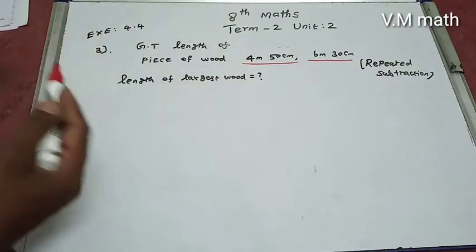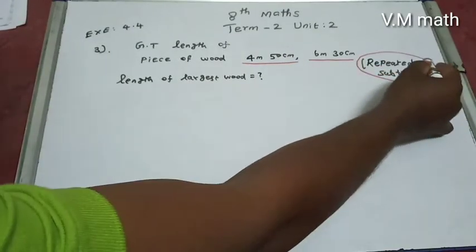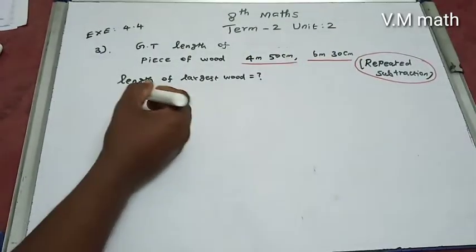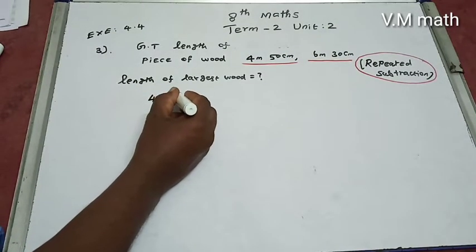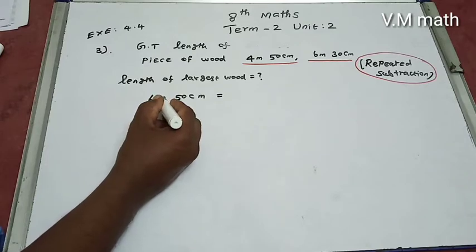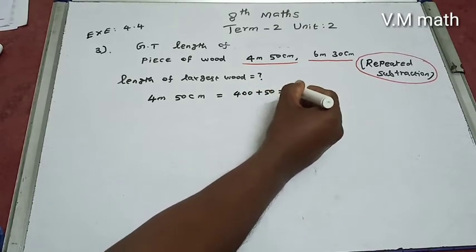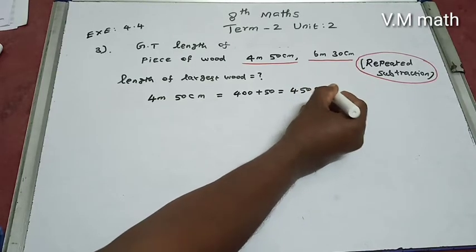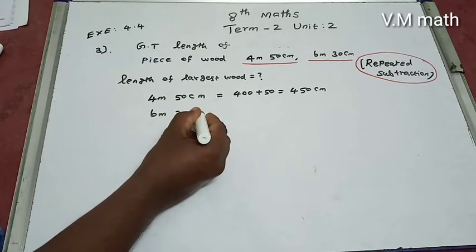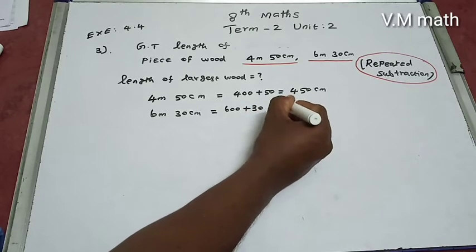So, length of largest wood. We will use the length of each piece of wood. 4 meters 50 centimeters: 1 meter equals 100 centimeters, so 4 meters is 400 centimeters plus 50, giving 450 centimeters. Next, 6 meters 30 centimeters: 6 meters is 600 centimeters plus 30 centimeters equals 630 centimeters.